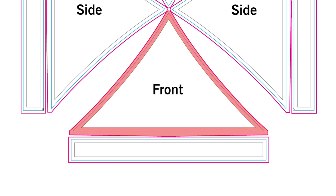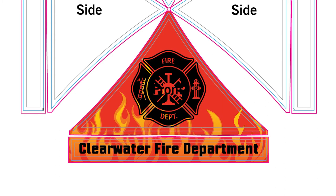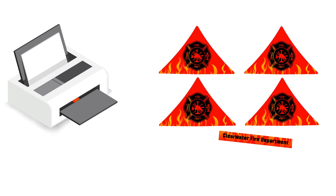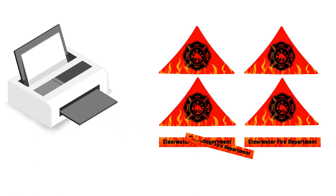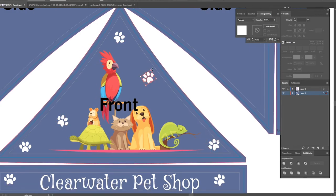Anything outside the gray safety area may be cut off or stitched over on the final product. Also note that we cannot guarantee that the design will line up across the seams, since all the peaks and valences are printed out separately and then sewn together by hand. Keep this in mind when you are designing an all-over printed tent.